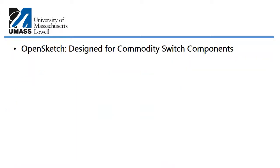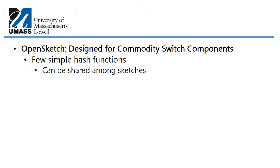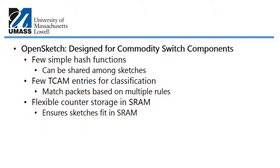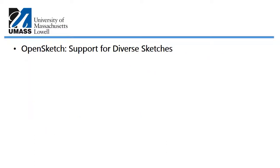OpenSketch is designed to work with commodity switch components. It uses a few simple hash functions that can be shared among sketches to reduce memory requirements, and a few TCAM entries for classification. Packets can be matched based on multiple rules in parallel for efficiency. There is flexible counter storage in SRAM, and OpenSketch ensures that sketches fit into the SRAM independent of traffic conditions.